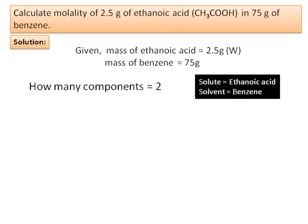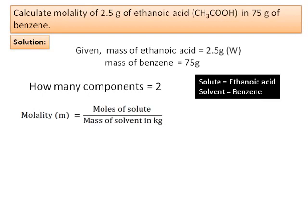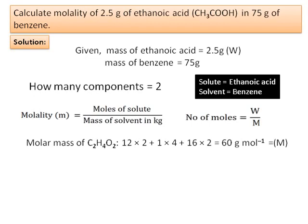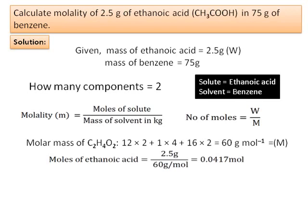The formula for molality is moles of solute divided by mass of solvent in kg. The ethanoic acid is given in grams, so convert using n = w/M. Molar mass of ethanoic acid (CH₃COOH) = 60 g/mol. Moles of ethanoic acid = 2.5 ÷ 60 = 0.0417 mol.